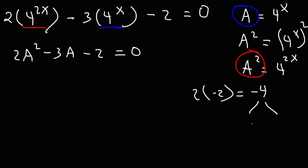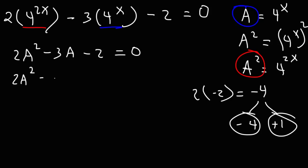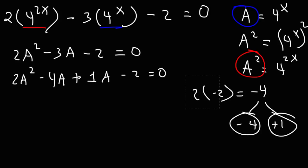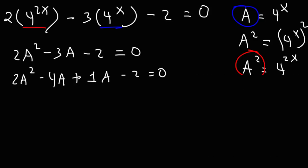Those two numbers are negative 4 and positive 1. Negative 4 times positive 1 is negative 4, and negative 4 plus positive 1 is negative 3. So what we're going to do now is replace negative 3a with negative 4a plus 1a. The reason we can do that is because negative 3a is mathematically equivalent to negative 4a plus 1a — they have the exact same value, just a different representation. So now we can use factoring by grouping.